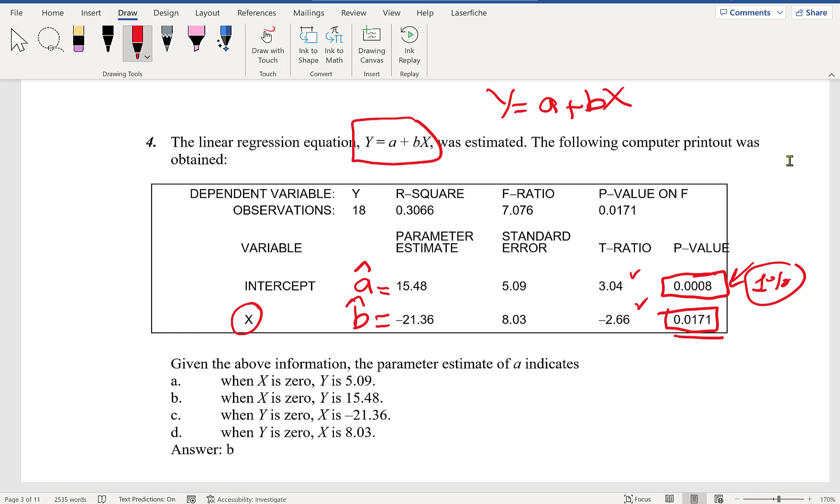Since it's less than 1%, it's significant at the highest level, 1%. This is statistically significant at 1.7% level, so statistically significant at 5% level. We have 18 observations. R-square is 0.366, which means the regression equation helps explain 36.6% of the variation in Y.